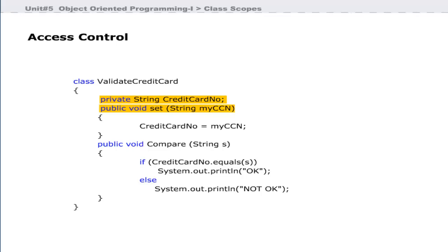In this class, the credit card number instance variable is private, so only public methods defined within this class can access this number. You cannot even view or display the value of a private instance variable since this class does not provide any method to display it. This is also an example of encapsulation of data and methods in a class, which gives the programmer complete control to restrict access to data.